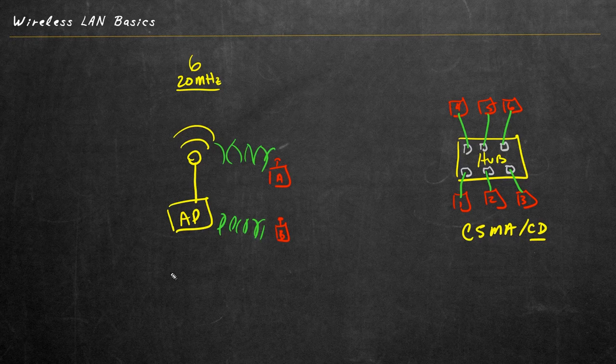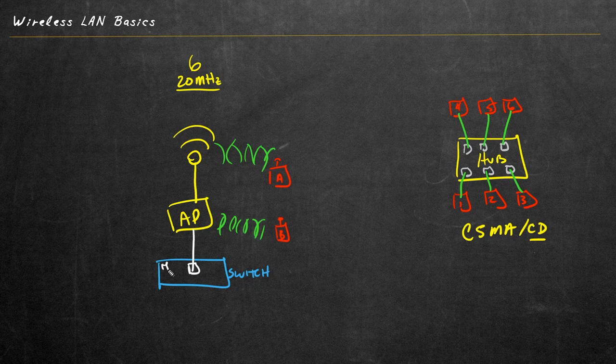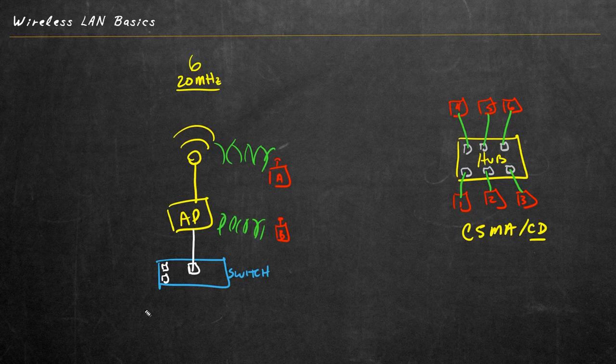And to finish off this picture, oftentimes that access point will be connected to a switch, just like that. And the switch is also very likely in a Fortinet environment, connected over directly or indirectly to a FortiGate, which I'll draw right here, which is acting as the controller for the switch stack and also for the access points. And this would be our FortiLink interface between the FortiGate and the switch.